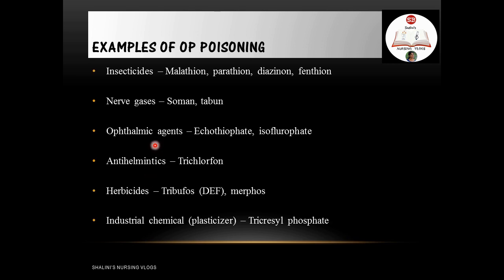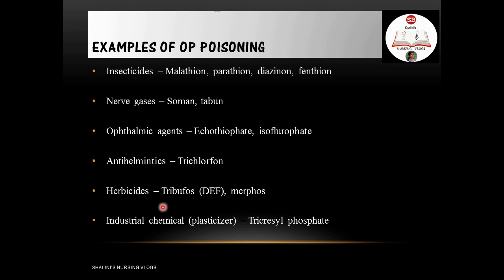There are many examples of OP compounds; here are a few: insecticides like malathion, parathion, disinon, and fenthion; nerve gases like soman and tabun; ophthalmic agents like echothiophate and isofluorophate; anti-helminthics like trichlorfon; herbicides like tribufos and merphos; and industrial chemicals like tricresyl phosphate.